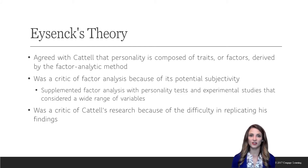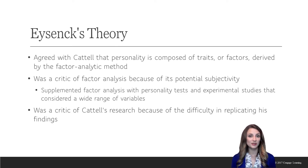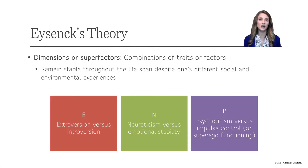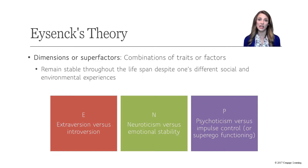Eysenck also used other statistical procedures and relied on personality tests and experiments to identify personality factors. Despite similarities between the two, Eysenck was a critic of Cattell's work, mainly because he had a difficult time replicating Cattell's studies. Eysenck identified three dimensions of personality traits. Each one he called a superfactor — a combination of behaviors used across situations and across time. These three superfactors he said were stable across the lifespan: extroversion, neuroticism, and psychoticism — E-N-P.